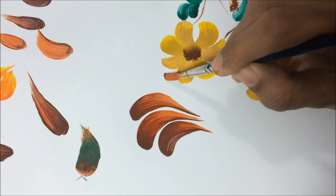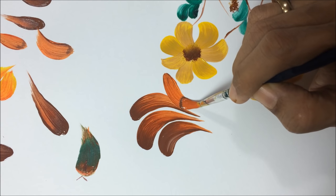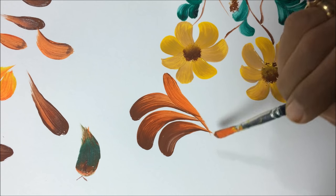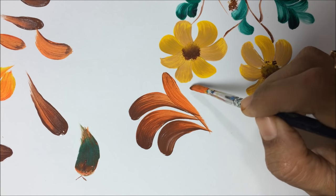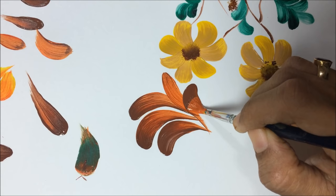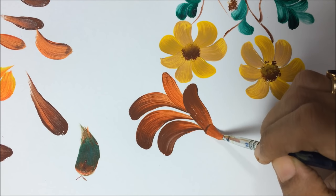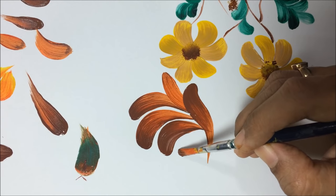So always remember this point: whenever you are practicing one stroke painting, either with flat brush or round brush, the outer color should have more extending power to get perfect stroke.